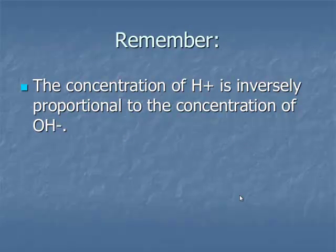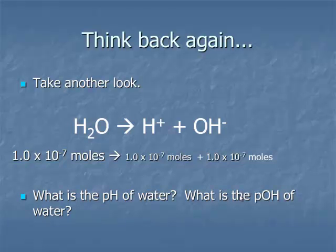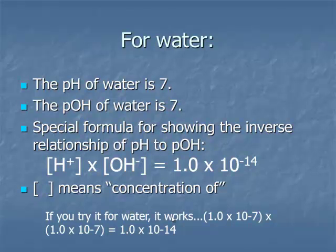The concentration of H+ is inversely proportional to the concentration of OH-. If you disassociate 1.0 × 10^-7 moles of water, you'll make even quantities of H+ and OH-. The pH of water is 7, and the pOH of water is also 7. On both scales, 7 means neutral.